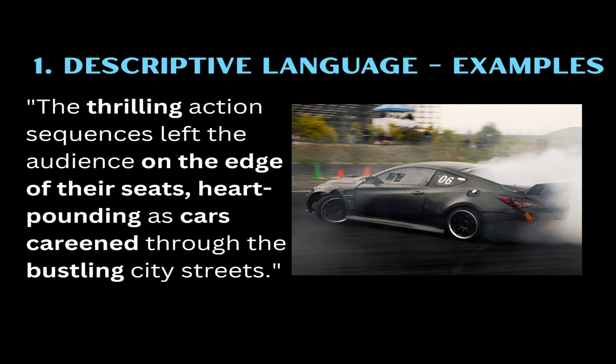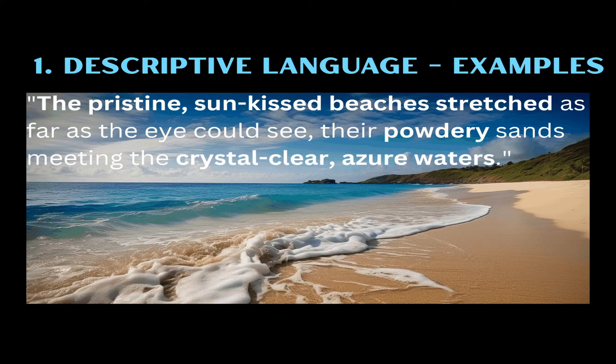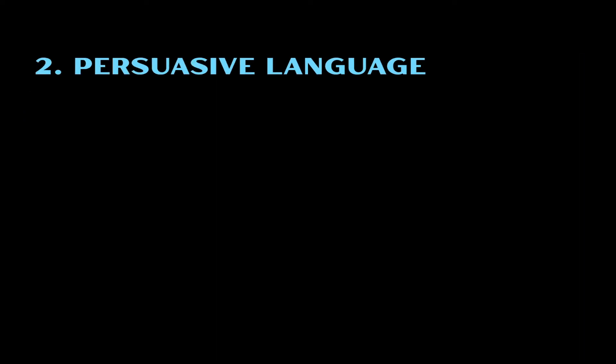Let's look at some examples of how vivid imagery enhances the quality of your review. Here's the first example: 'The thrilling action sequences left the audience on the edge of their seats, heart-pounding as cars career through the bustling city streets.' Impactful word choices such as thrilling, heart-pounding, careered, and bustling all convey a sense of excitement and speed, helping the reader feel the thrill of the action. Here's the next example: 'The pristine, sun-kissed beaches stretched as far as the eye could see, their powdery sands meeting the crystal-clear azure waters.' Here, the reviewer paints the image of a beautiful, serene beach by appealing to the reader's sense of sight and touch. In your exam, you're expected to use specific vocabulary with strong connotations and vivid imagery to help your readers visualize what you're explaining.